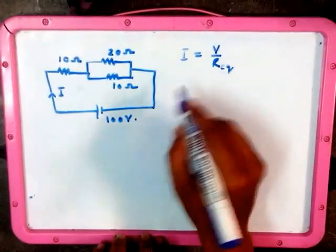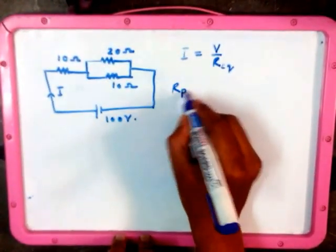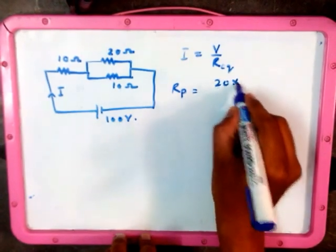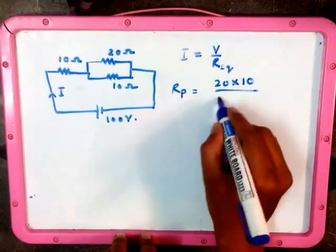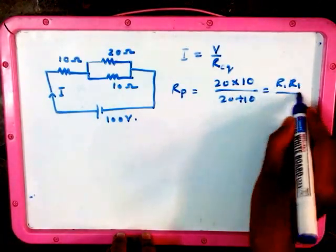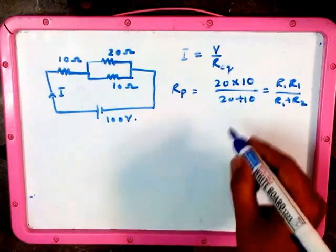If you want to find out equivalent R, first you need to solve these two resistances which are in parallel. So we have R_P is equal to, for parallel we have the formula: 20 into 10 divided by 20 plus 10. R1R2 divided by R1 plus R2 for two resistances in parallel.